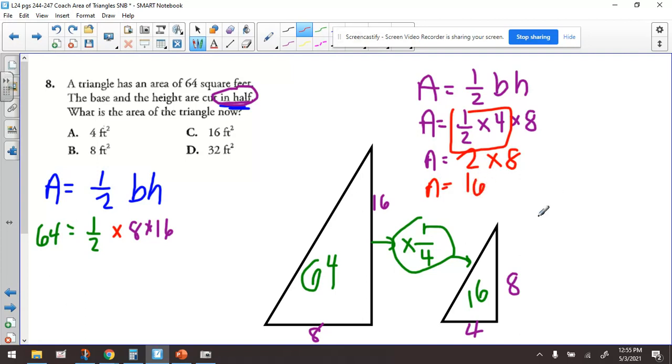Right? So that kind of confirms it. So if the original one had an area of 64, the smaller one is going to have an area of 16. Why? Just to sum up the shortcut on this.